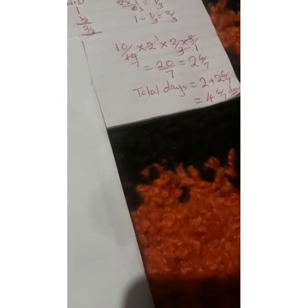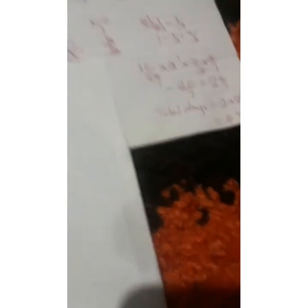We fill in two and six-sevenths in the blank space. Therefore the total number of days is two plus two and six-sevenths, which gives us four and six-sevenths days. That is our answer.